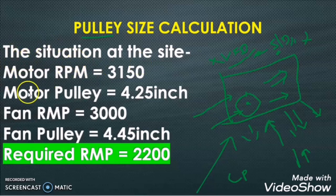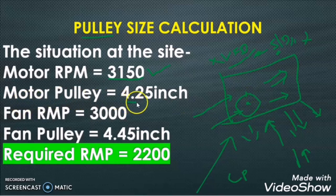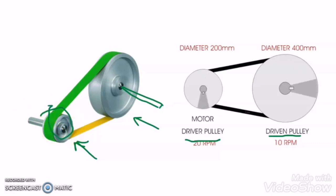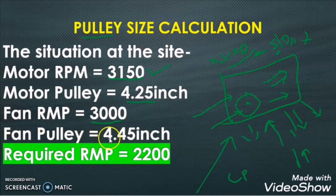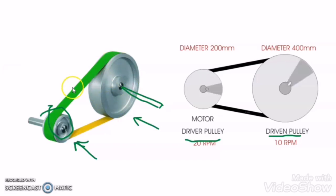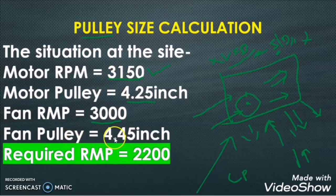In our site situation: the motor RPM is 3150, the motor pulley size is 4.25 inches. The fan RPM was 3000 RPM, and the pulley connected with the fan was 4.45 inches. In this condition, the fan RPM is 3000, and due to this high RPM the water is being carried out by the air, causing water to drip from every corner of the FAHU. We need to reduce the fan RPM.